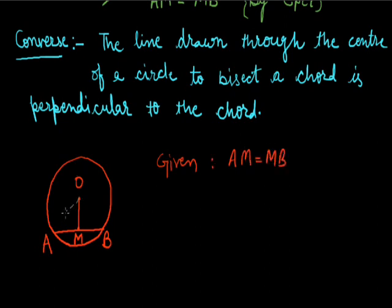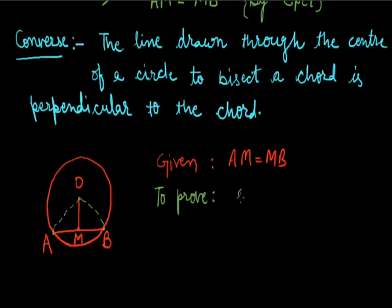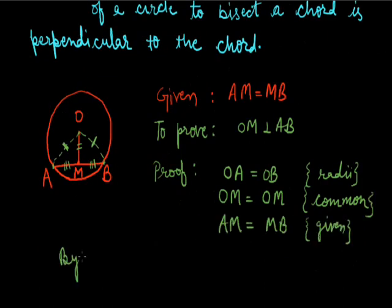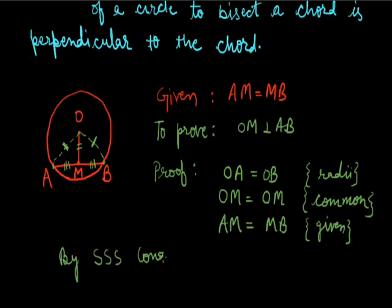Now, two triangles are formed by joining the endpoints of the chord with the center of the circle. OA and OB are radii of the circle and they are equal. OM is the common arm of both triangles, and AM is equal to MB, which is given. Hence by SSS congruency, both triangles are congruent. OA is equal to OB, OM is common in both triangles, and AM is equal to MB.